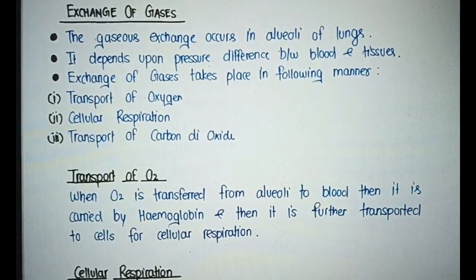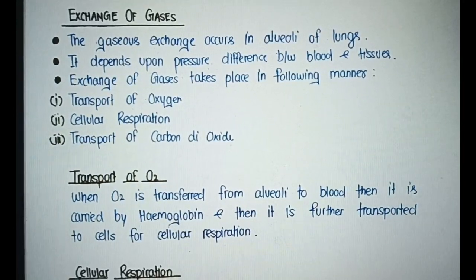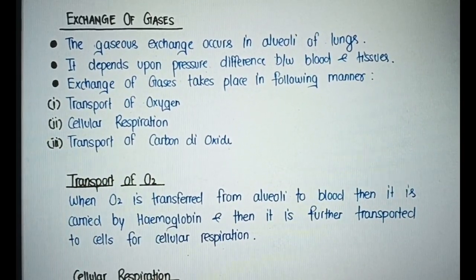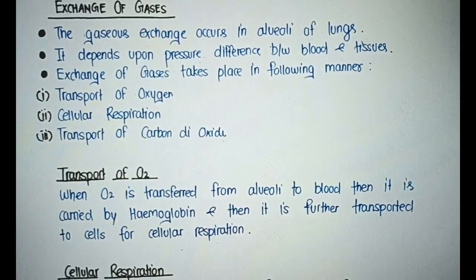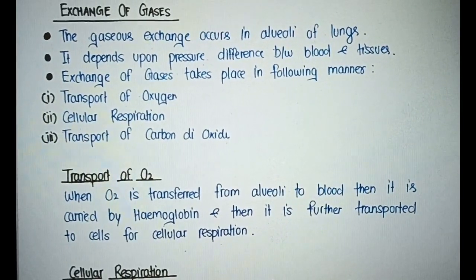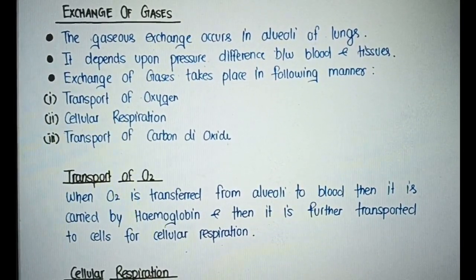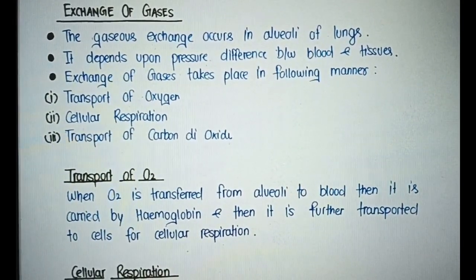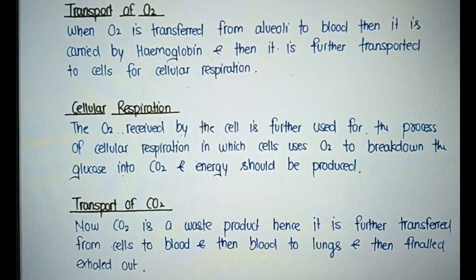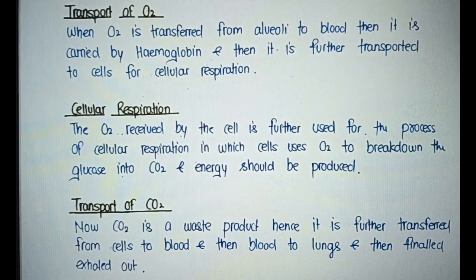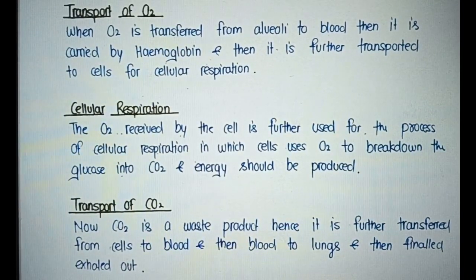Transport of oxygen: When O2 is transferred from alveoli to blood, it is carried by hemoglobin and then transported to cells for cellular respiration. Cellular respiration: The oxygen received by the cell is used for the process of cellular respiration in which cells use O2 to break down glucose into carbon dioxide, and energy is produced. Transport of CO2: Carbon dioxide is a waste product, hence it is transferred from cells to blood, then blood to lungs, and then finally exhaled out.